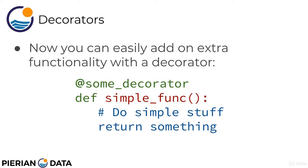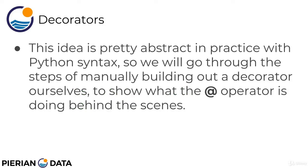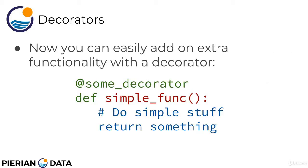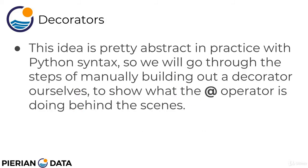You take your original simple function, connect it to some decorator which adds extra code, and if you don't want that extra functionality, you just delete the @decorator line on top of the function. We're going to go through the steps of manually building out a decorator to show what that @ operator is actually doing behind the scenes.